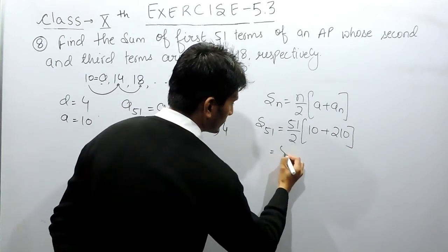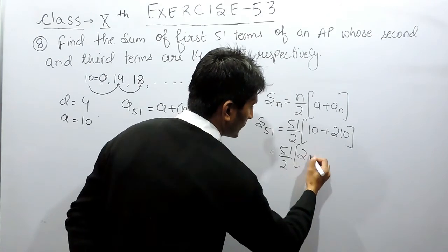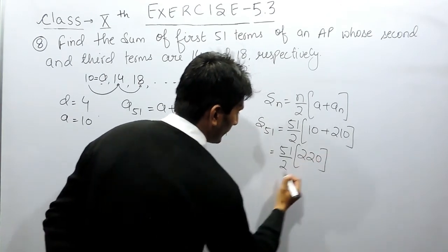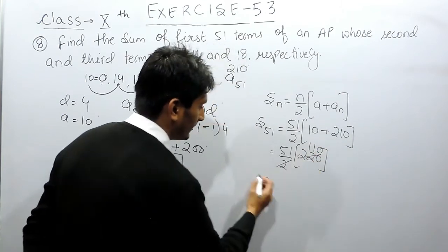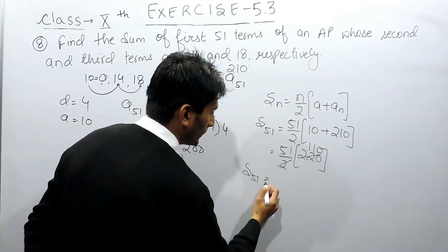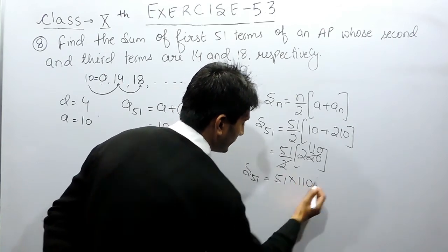Now I can solve this. This is 51 upon 2. This when added is 220. And this can be cancelled 11 times 110. So the sum of 51 terms must be equal to 51 multiplied by 110.